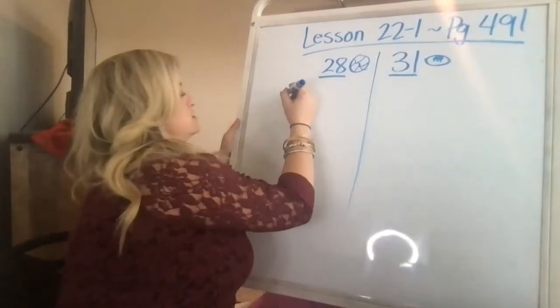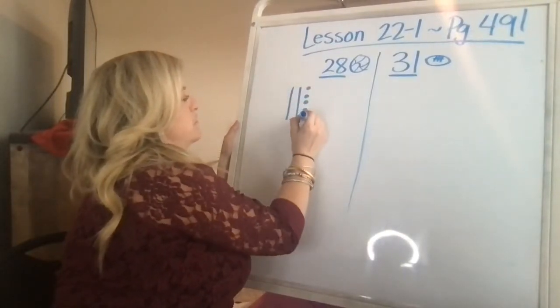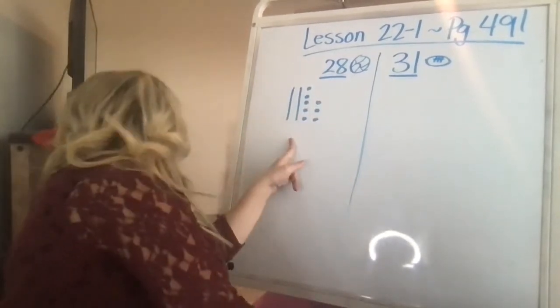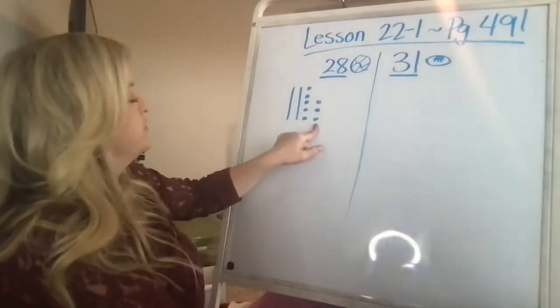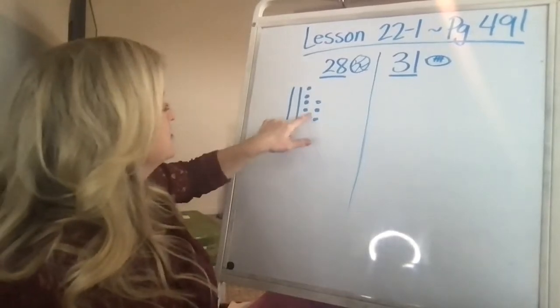So I'm going to do 28. I'm going to do one, two, one, two, three, four, five, six, seven, eight. So five going up and three more down, 10, 20, 25, 26, 27, 28.